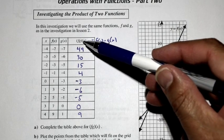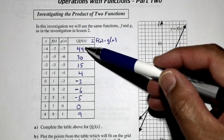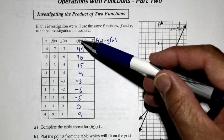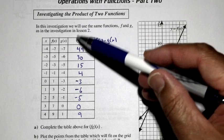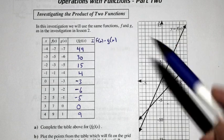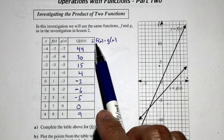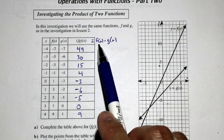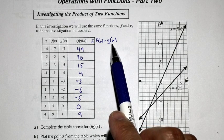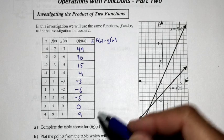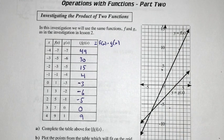So there we have it. We now have the y value for this f times g — that notation means the y value of f of x times the y value of g of x. And here's the completed table.